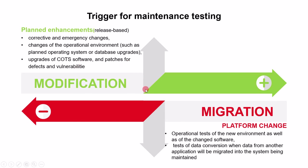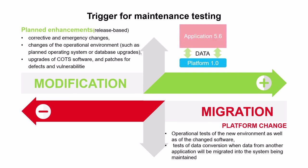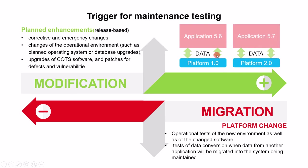Next is change due to migration, and an example of it is a platform change. Suppose you have a platform with version 1.0 and an application with version 5.6, and there is data communication between them. Now if the platform changes from 1.0 to 2.0, this may impact data communication with the application. To solve this, we have to change the application so that we can establish effective communication again.